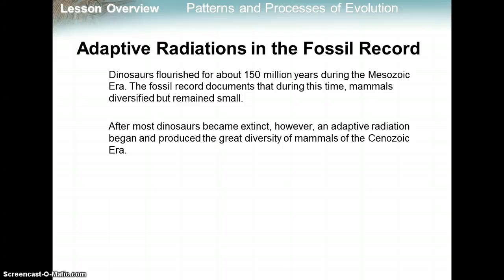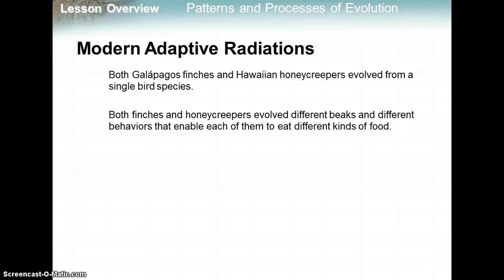Dinosaurs flourished for about 150 million years during the Mesozoic era. The fossil record documents that during this time, mammals diversified but remained small. After most dinosaurs became extinct, an adaptive radiation began and produced a great diversity of mammals in the Cenozoic era — mammals were now able to diversify and grow larger without the dinosaurs. Both Galapagos finches and Hawaiian honeycreepers evolved from a single bird species, developing different beaks and behaviors to eat different kinds of foods, adapting to new environments and becoming distinct species.